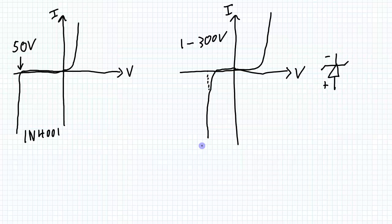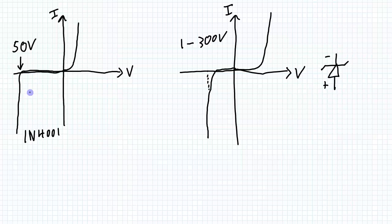So the bottom line is there's not much difference between the rectifying diode and the Zener diode. The difference is the Zener diode is designed to start conducting at a certain voltage and is used in the reverse bias direction, whereas a signal or rectifying diode is designed to block voltage — you don't want to apply more than its rated blocking voltage, and it's not designed to operate in reverse bias.